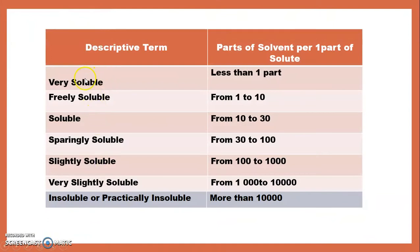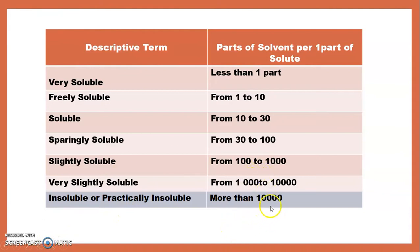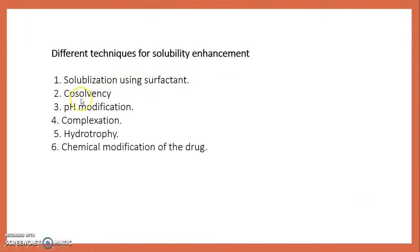The descriptive solubility terms are: very soluble means less than one part remains insoluble; freely soluble means 1 to 10 parts; soluble means 10 to 30 parts; sparingly soluble means 30 to 100 parts; slightly soluble means 100 to 1000 parts; very slightly soluble means 1000 to 10,000 parts; and insoluble or practically insoluble means more than 10,000 parts remain insoluble.